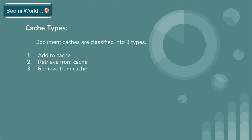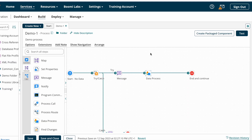In Boomi, document caches are classified into three types: Add to Cache, Retrieve from Cache, and Remove from Cache. We'll discuss all these cache types one by one.